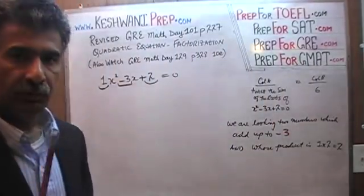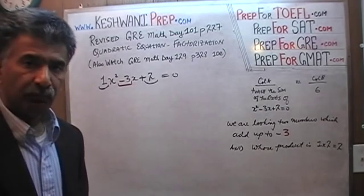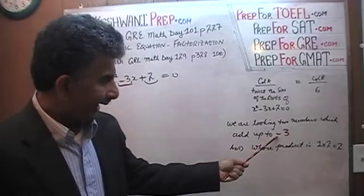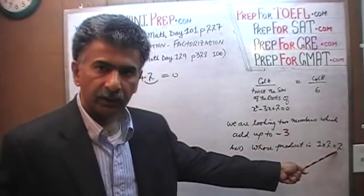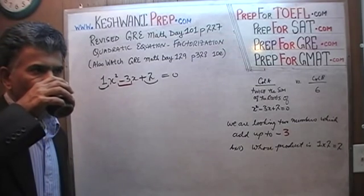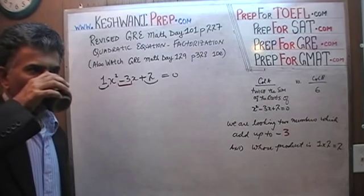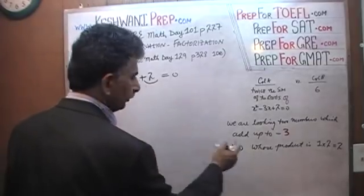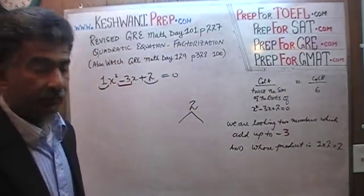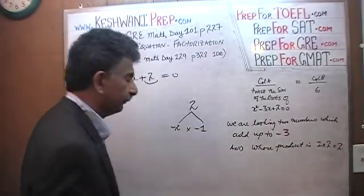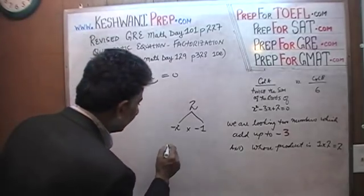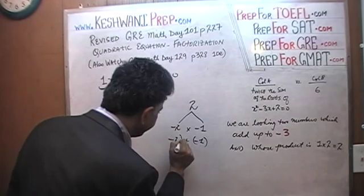Once you figure out those two numbers, the rest is easy. Think of two numbers which add up to −3 and when multiplied give +2. The two numbers are −2 and −1: (−1) × (−2) = +2, and (−2) + (−1) = −3. Their product is +2 and their sum is −3.